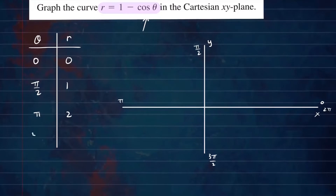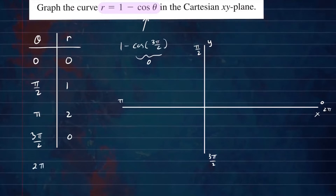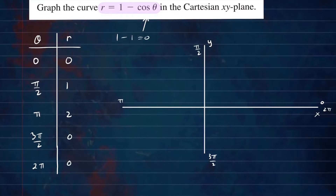For 3π/2: r = 1 − cos(3π/2). Cosine of 3π/2 is 0, so this is 1 − 0 = 1. And for 2π: cosine of 2π is 1, so we have 1 − 1 = 0. I made a mistake earlier — cosine of 3π/2 is 0, so 1 minus 0 is 1, not 0. Sorry about that.